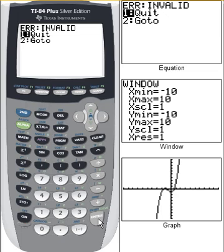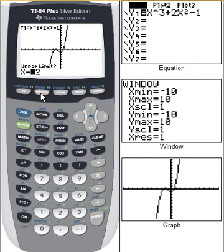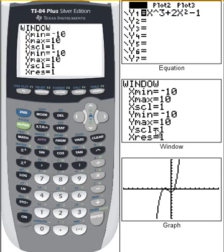Now we got an error in this case. The reason we got an error is because of our domain. If we look at our window, our window only goes from negative 10 to 10 in the x's. You must have within your window your limits if you're going to use this method.